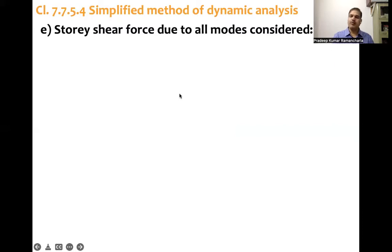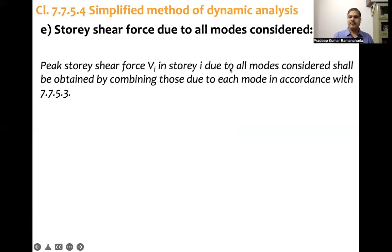Coming to story shear force due to all modes considered: peak story shear force Vi in story i due to all modes considered shall be obtained by combining those due to each mode in accordance with clause 7.7.5.3. We add up all those values.